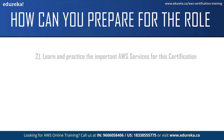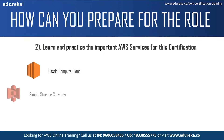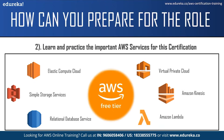The next step which will help you prepare for the role is learning and practicing the important AWS services for the certification. Some of the important services are Elastic Compute Cloud, Simple Storage Service, Relational Database Service, Virtual Private Cloud, Amazon Kinesis, and Amazon Lambda. You can practice some of the services using an AWS Free Tier account, which allows you to access over 85 AWS services for free — all you have to do is submit the required information and you can start practicing 85+ services for free.